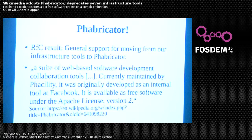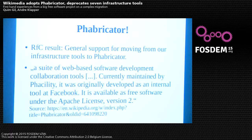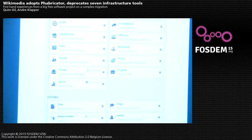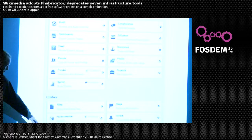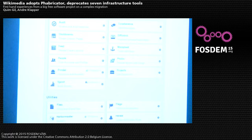Fabricator is, according to Wikipedia, a suite of web-based software development collaboration tools, originally developed internally at Facebook. It's written in PHP and licensed under Apache 2. It's a software forge, so it has several applications well-integrated with each other — core applications for tasks and bug reports, something called Manifest, code review, notifications, and at some point continuous integration. The key thing is it's well integrated, so things link to each other. You can visit fabricator.wikimedia.org.